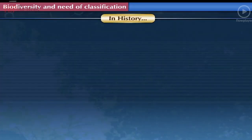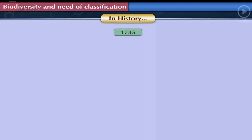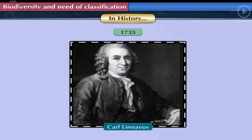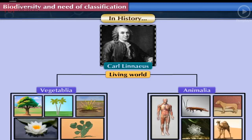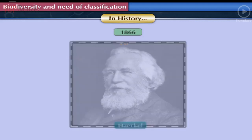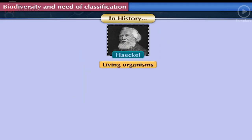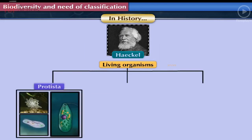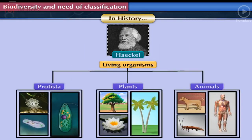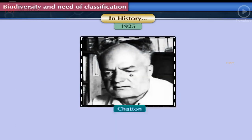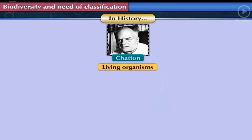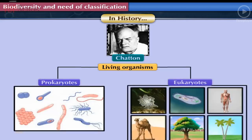In History: In 1735, Carl Linnaeus was the first scientist who divided the living world into two kingdoms — Vegetabilia and Animalia. In 1866, Haeckel considered three kingdoms: Protista, Plants, and Animals. In 1925, Chatton created two groups of living organisms: Prokaryotes and Eukaryotes.